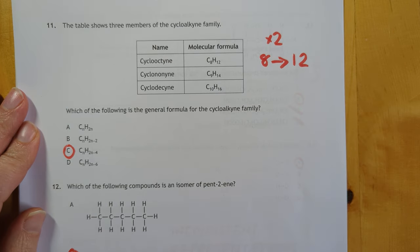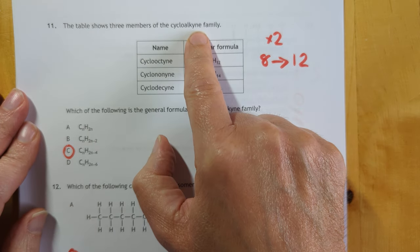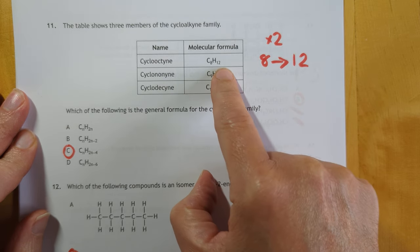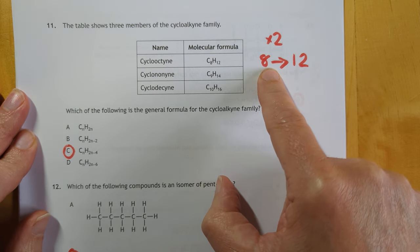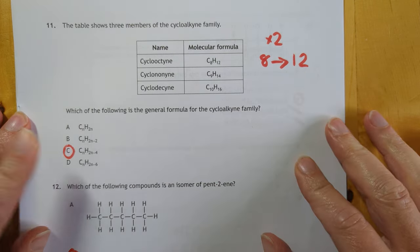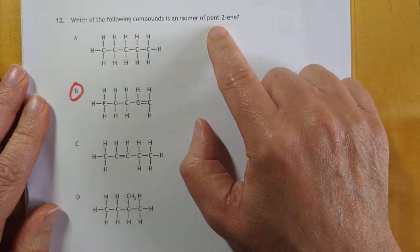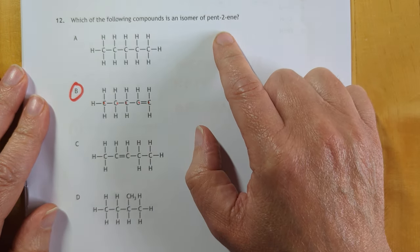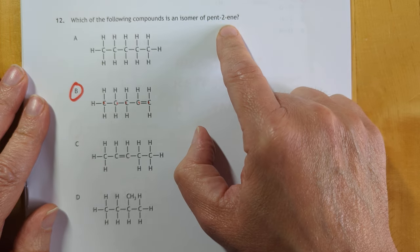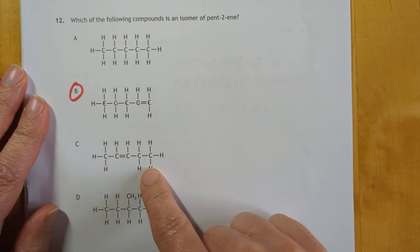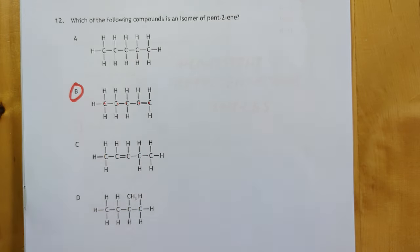Number 11. We've got the acycloalkynes. Never heard of them. So it's problem solving time. How do we get from 8 carbons to 12 hydrogens? You multiply by 2, which will give you 16, and then subtract 4. So that is our answer. Which of these following components is an isomer of pent-2-ene? I looked for the shortcut. Find 5 carbons. Find a double bond. It's this one or this one. But that is still pent-2-ene. This is pent-1-ene. So that's your answer.